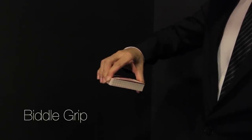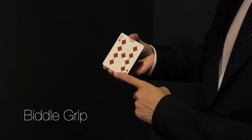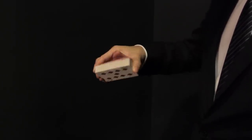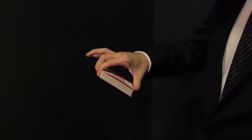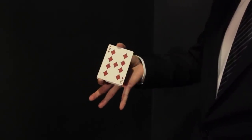Biddle grip. Grip the pack of cards from above with four fingers on the top short edge and thumb on the bottom. It can also be done with just your index finger and thumb. This grip is usually done with your master hand.